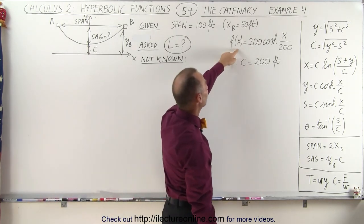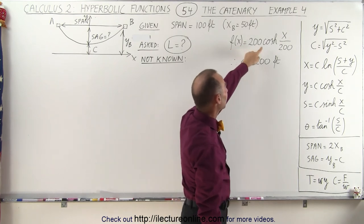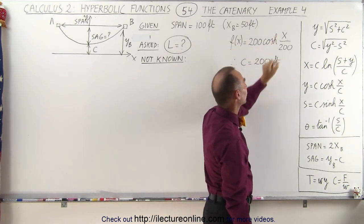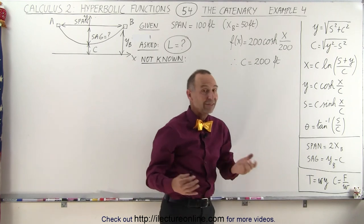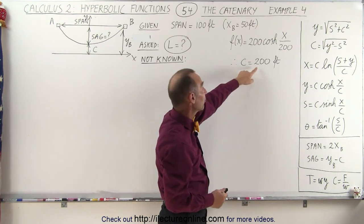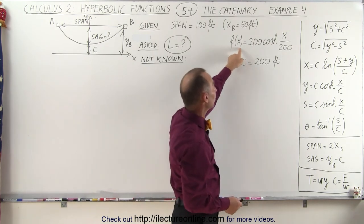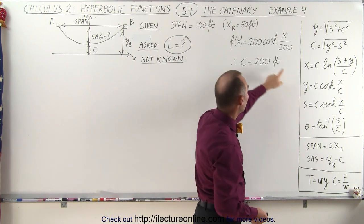The equation as a function of x is equal to 200 times the hyperbolic cosine of x over 200. Now, in essence, what they've given us, they've given us the value for c, because when you look at the equation here,